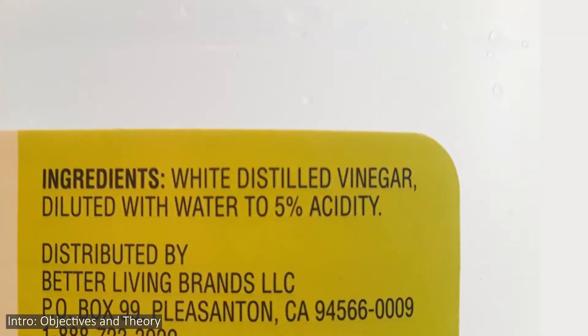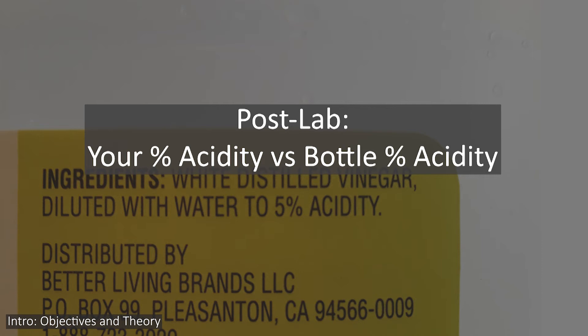On commercial bottles, when they say percent acidity, this is what that number means. A bottle that shows 5%, for example, is 5% acetic acid by mass. As part of your post lab, you'll take the mass percent you get and compare it to what the bottle says it is. So you could think of this experiment as being a kind of quality control check for the vinegar maker.